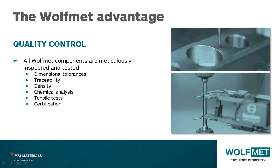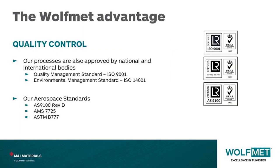Throughout the manufacturing process we pay diligent attention to quality control. Every batch of powder we produce has its mechanical and chemical properties tested and confirmed in accordance with ASTM B777 in our on-site laboratory. Every sintered form has full traceability back to the individual batches of powder used to create it, and every machined part is confirmed to be within dimensional tolerances. Regarding quality management systems, we operate in accordance with both ISO 9001 and, for aerospace parts, AS9100 Rev D. Mechanical and chemical properties of tungsten alloys are defined by ASTM B777 and AMS 7725, and Wolfmet can manufacture material tested and certified to both specifications.